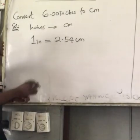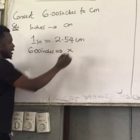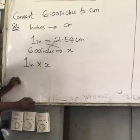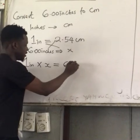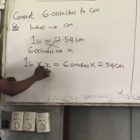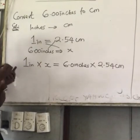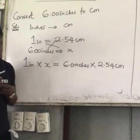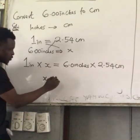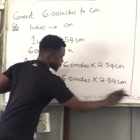Using the manipulative method from secondary school: if 1 inch equals 2.54 cm, then 6.00 inches equals X. Cross multiply: 1 inch × X = 6 inches × 2.54 cm. Make X the subject by dividing both sides by 1 inch. So X = 6.00 inches × 2.54 cm / 1 inch = 15.24 cm.